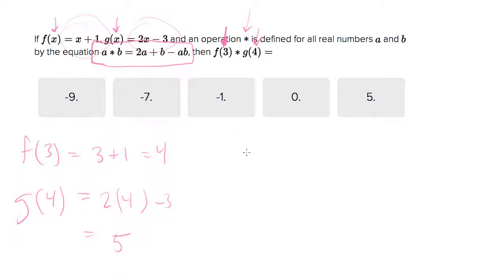So now what we want to do is find f of 3, which is equal to, I'll rewrite this. So f of 3 star g of 4. That's not multiplication. That's their special character star. So f of 3 is 4. So we want to find 4 star 5. g of 4 is 5.